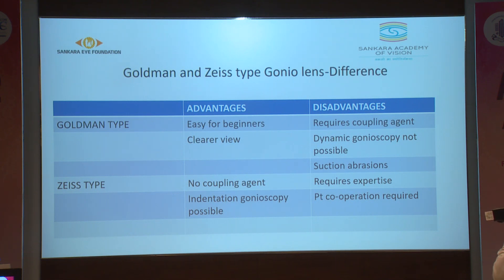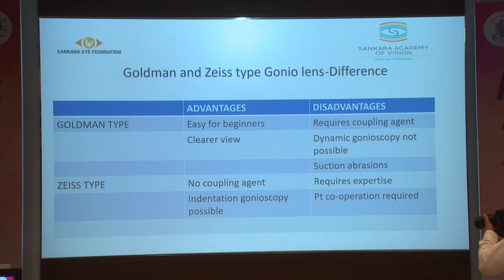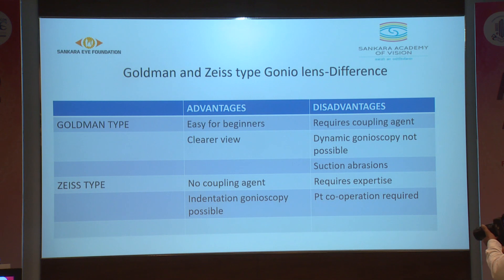Advantages of the Goldman gonioscope include being easy for beginners and giving a clearer view. However, disadvantages are that it requires a coupling agent, indentation gonioscopy is not possible, and suction abrasions can occur. With the Zeiss type gonio lens, no coupling agent is required and indentation gonioscopy is possible; however, it requires expertise and patient cooperation.